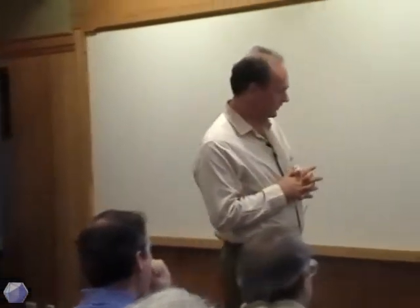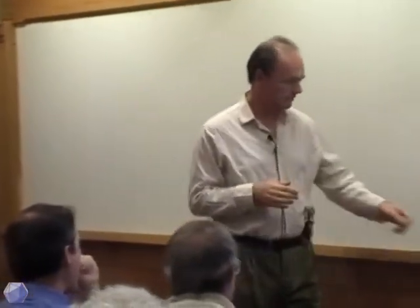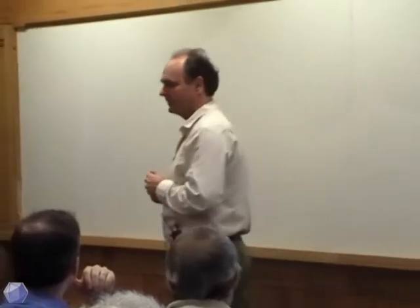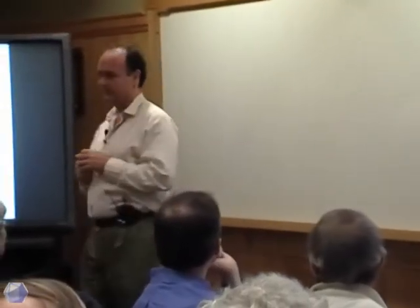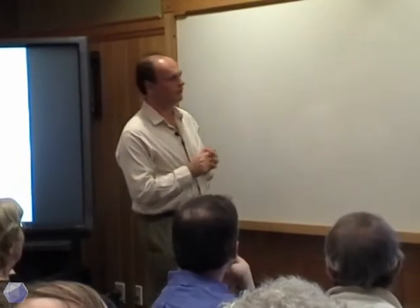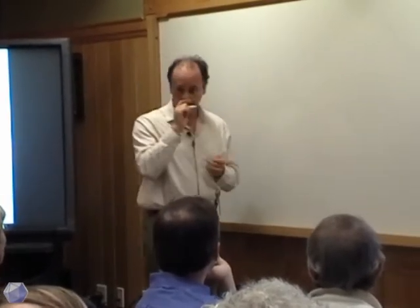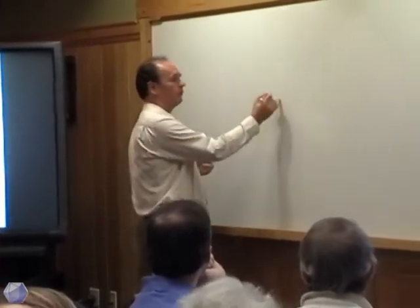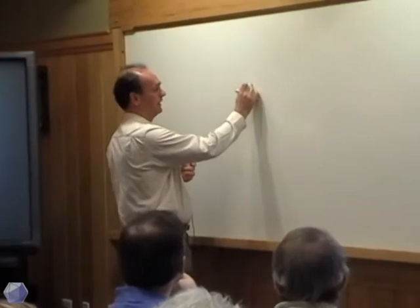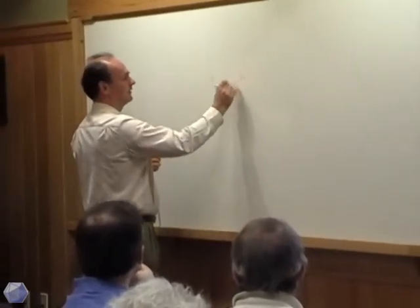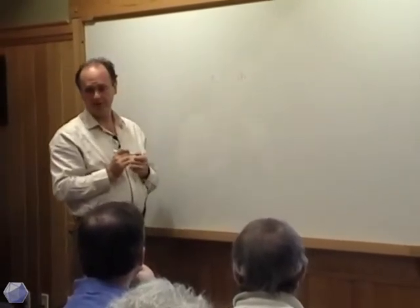I'm going to start where one should start with prime numbers, which is the proof that there are infinitely many prime numbers. I'm sure everybody here knows something about this. The proof of Euclid — the proof in Euclid's book is simply: we assume that we have a finite set of primes, and then we prove that that's wrong.